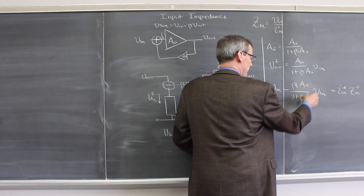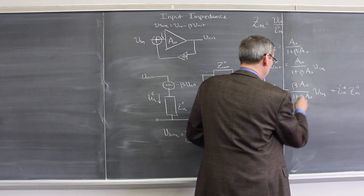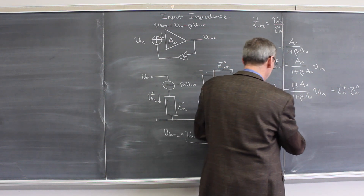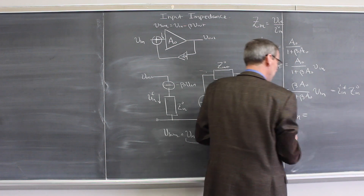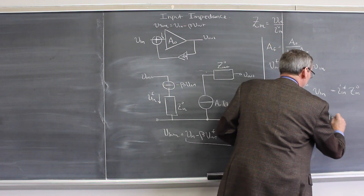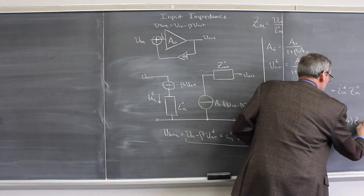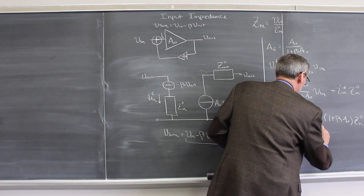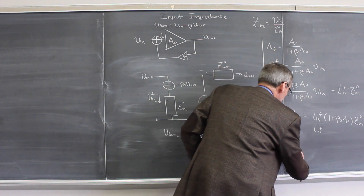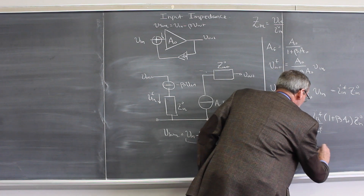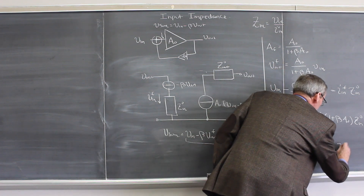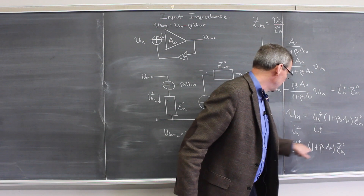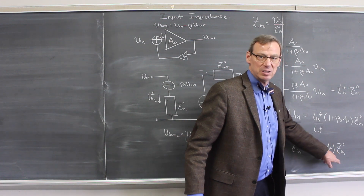We multiply both sides by (1 + beta·A0) to clear the denominator: (1 + beta·A0)·Vn minus beta·A0·Vn — the beta·A0 terms cancel — so we get Vn equals I_in(feedback) times (1 + beta·A0) times Zin(0). Dividing both sides by I_in(feedback), this is just the input impedance with feedback: Zin(feedback) equals (1 + beta·A0) times Zin(0). We see this is a number bigger than 1, so the input impedance with feedback is bigger than without feedback, just as we expected.